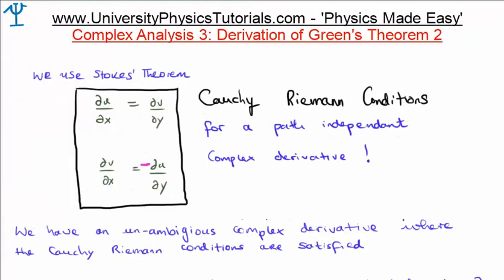So, the Cauchy-Riemann conditions are written in front of you. These are for a path-independent complex derivative. This is where our function is made up of a real component and an imaginary component, u and v, and each of those are a function of x and y. What we're going to do is use Stokes' theorem and see if we can come up with Green's theorem using these Cauchy-Riemann conditions.